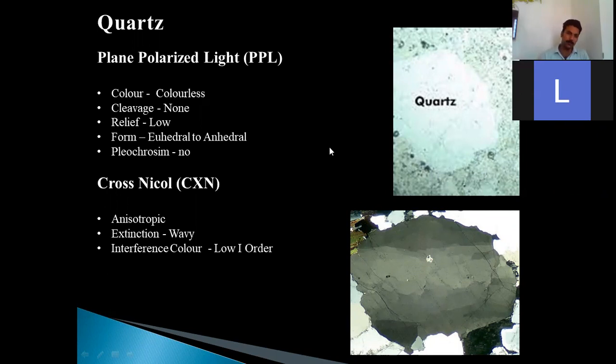The first thing that we have seen in cross-nicol is this anisotropism. The next most important aspect of quartz is the wavy extinction. The extinction shown by quartz is wavy in nature or cloudy in nature. You will never get the bands, you know, alternate white and black bands. You will get a wavy or cloudy extinction in the quartz grain, so it could be a diagnostic property. The interference color is low of first order. First order color means it belongs to white to grayish color. Birefringence is low.